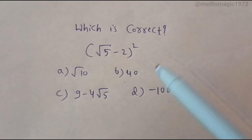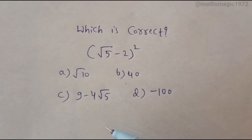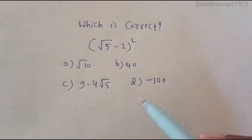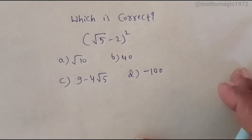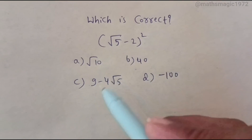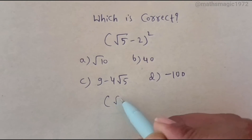Write (√5 - 2) whole square. Option A: √10, Option B: 40, Option C: 9 - 4√5, Option D: -100. Here, (√5 - 2) whole square — you have to write (√5 - 2) two times.